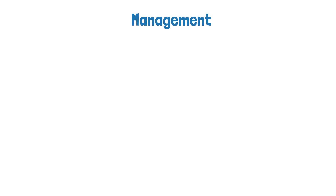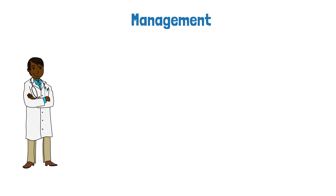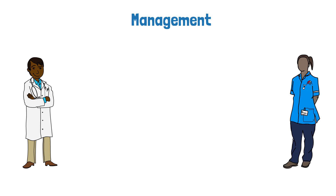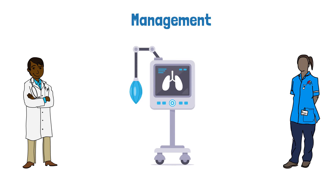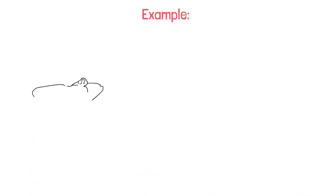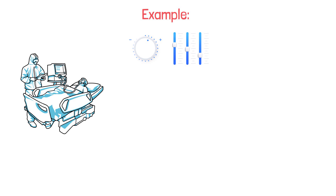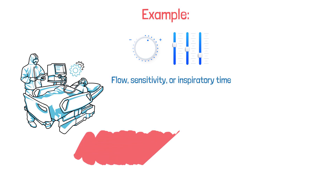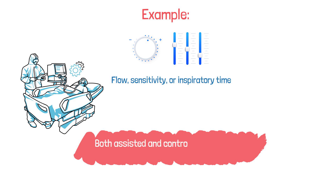The management of ventilator dyssynchrony depends on the specific cause. Since inappropriate ventilator settings are typically involved, making proper adjustments appears to be the best treatment method. For example, the practitioner may need to adjust the flow sensitivity or inspiratory time, and a different ventilator mode may be considered as well.